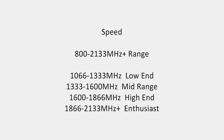Speed or frequency is how fast the memory runs. Common speeds for DDR3 memory go anywhere from 800 MHz up to 2133 MHz and beyond. For a low-end computer, speed isn't going to matter too much, so a kit with 1066 or 1333 MHz will be fine. For mid-range, you want to look into 1333 to 1600 MHz. 1600 to 1866 MHz is more for the high-end, as some motherboards do not support that high of a speed.